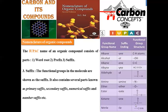For ketones - where C=O group is present with alkyl groups on both sides - the suffix is 'one.' For example, CH₃-C(=O)-CH₃: three carbons, so root word is prop + one = propanone. For nitriles - C≡N triple bond - the suffix is 'nitrile.' 'Cyano' is the common name; the IUPAC name will be nitrile. For example, CH₃-C≡N: two carbons, so ethane nitrile. Note that the carbon of the CN group is also counted in the root word.